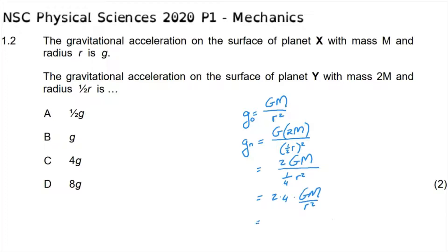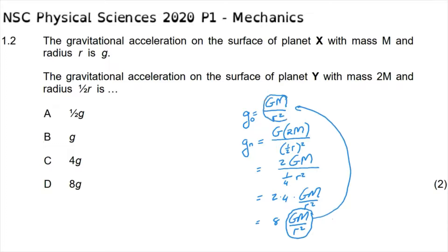This can then be simplified to 2 times 4 times gM over r squared, or just 8gM over r squared. We can then see that this gravitational acceleration is 8 times the same as our original gravitational acceleration g. Therefore the new gravitational acceleration equals 8g, making the correct answer option D.